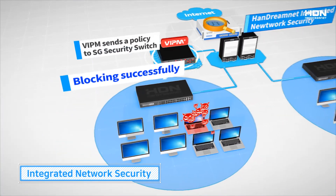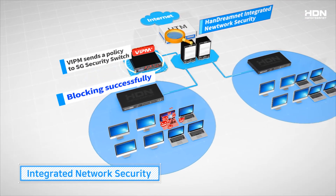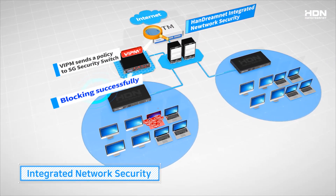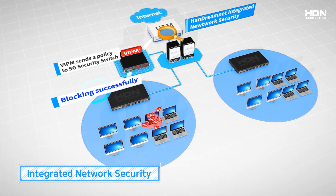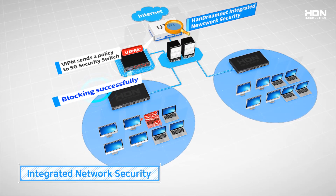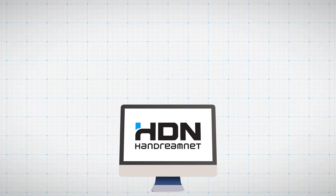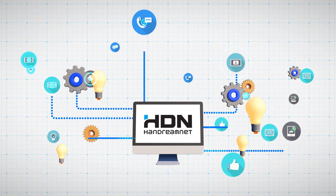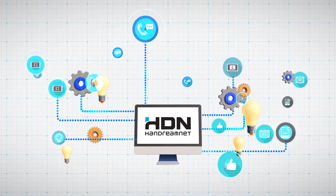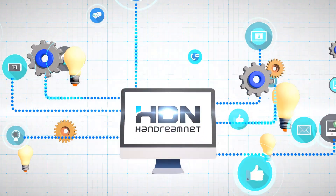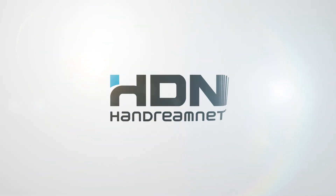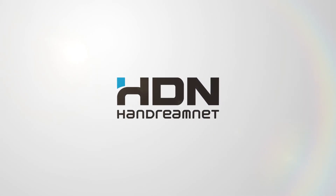Through UTM and APT integration, Han DreamNet can simply identify the user or PC causing the problem and isolate them from the network until further notification. Han DreamNet provides a comprehensive security solution for your company and employees. Any limitation of internal security threats will not be an issue anymore if you select Han DreamNet — global network security leader.